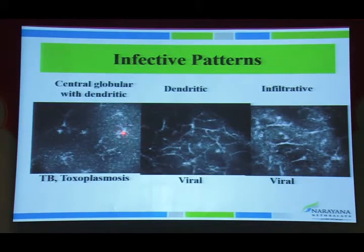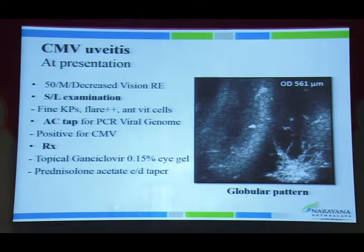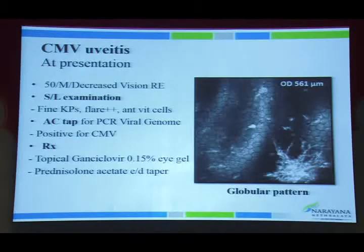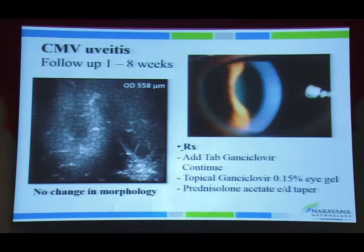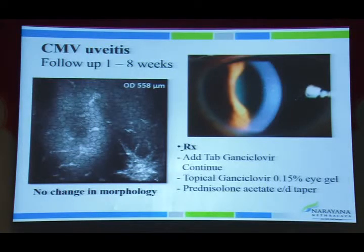A KP with a central globular with dendritic or infiltrative dendritic pattern is suggestive of infective etiology. In a case example of chronic anterior uveitis with fine KPs looking viral, the patient did not respond to acyclovir therapy. Aqueous tap was positive for CMV virus, showing the central globular with dendritic pattern. The patient was started on topical ganciclovir gel; after 8 weeks the same morphology persisted, so therapy was switched to oral valganciclovir, achieving complete resolution of KPs and inflammation.